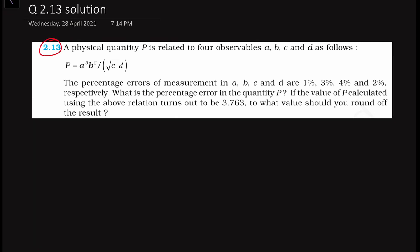In this problem we are given that a physical quantity P is related to four observables A, B, C, and D. These are the four observables, meaning this quantity P is a function of these four observable values. We are given a relation so A, B, C, and D are related to P using this relation.